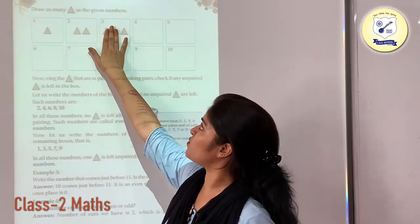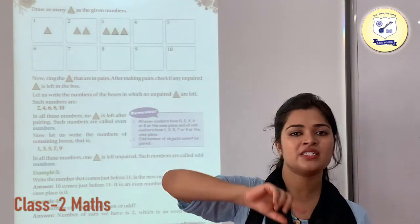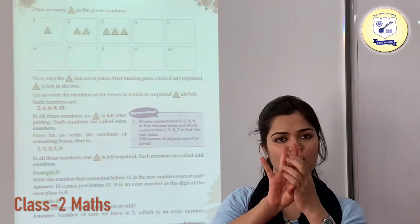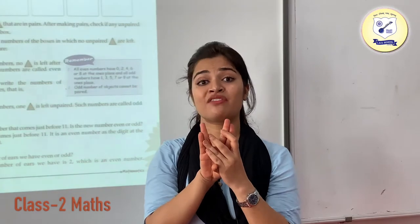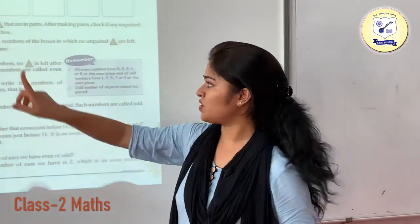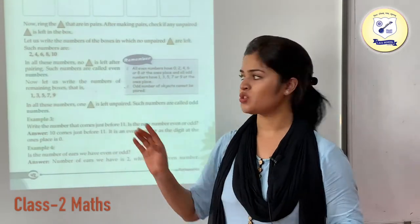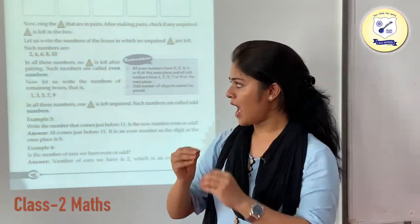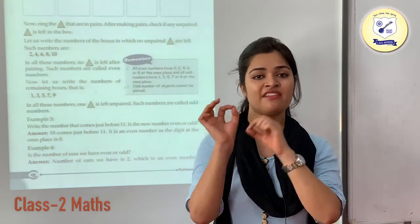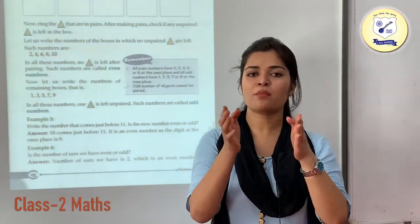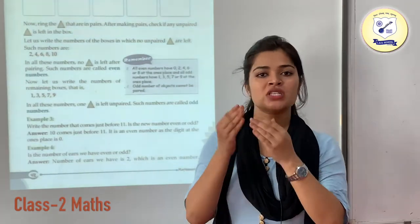Here we are left with 1 triangle, so this is not your even number. For 4, we have pairs of 2 and 2, so this is your even number since we are not left with any object. Similarly, 6 is your even number, 8, and then 10 — these are your even numbers. The numbers in which we are left with objects and cannot properly form pairs — those are your odd numbers.